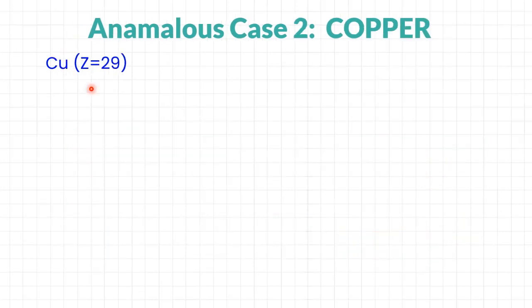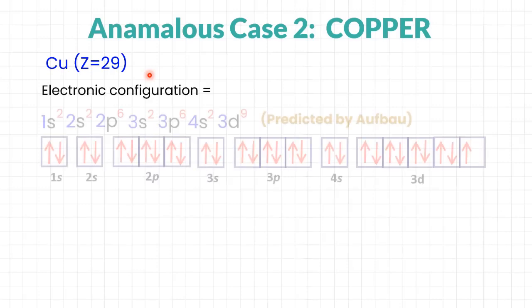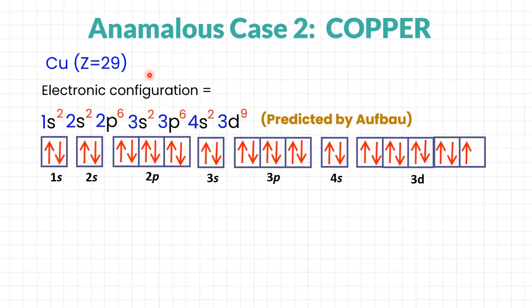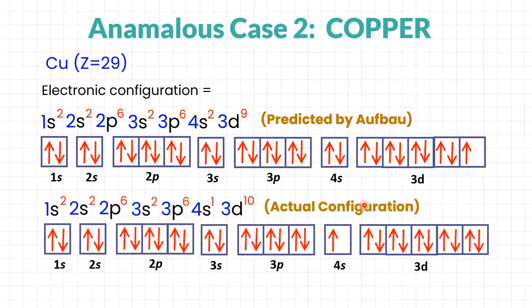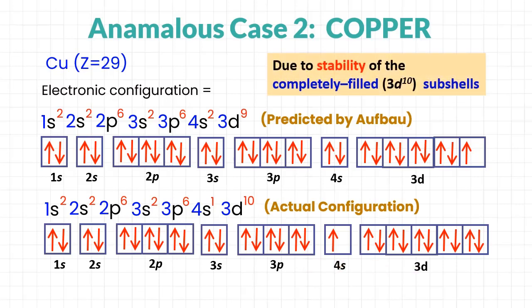For copper with proton number 29, the case is similar to chromium with a slight difference. The electronic configuration predicted by Aufbau would give 3d⁹ with only a partially filled arrangement, which has lower stability compared to the fully filled 4s orbital. So for copper, the configuration is adjusted to the actual configuration of 4s¹, 3d¹⁰ due to the stability of the completely filled 3d orbital.